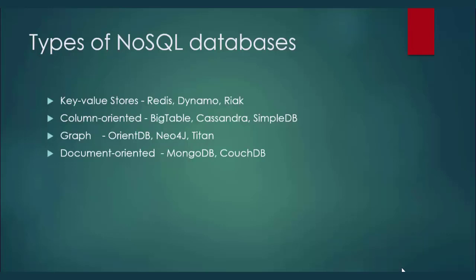The next and very popular type is document-oriented databases. Examples are MongoDB and CouchDB. In this course, we are going to learn about the document-oriented database MongoDB. In this kind of database, we store data in the form of documents. In the case of MongoDB, we store data in the form of JSON documents, which are objects.